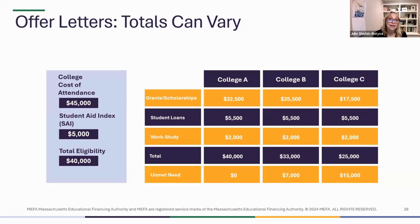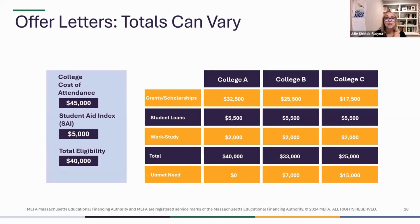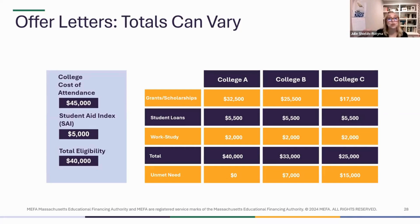College C doesn't have as many resources and awarded a scholarship of $17,500 plus the loan and work-study, for a total of $25,000 in aid, leaving $15,000 of unmet need — a bill of about $20,000 to come up with each year. This is where need and merit both come into the picture: depending on where your student falls in the admissions pool, the grant and scholarship might vary. Students at the top of the admissions pool could get a boost, so that factors in here sometimes too.